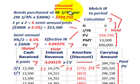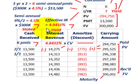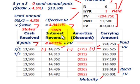Let's look at the case where the bonds were purchased at a discount. We have to set up an amortization schedule, and we need to calculate the effective yield rate on this bond because we need to amortize it up to its maturity value.